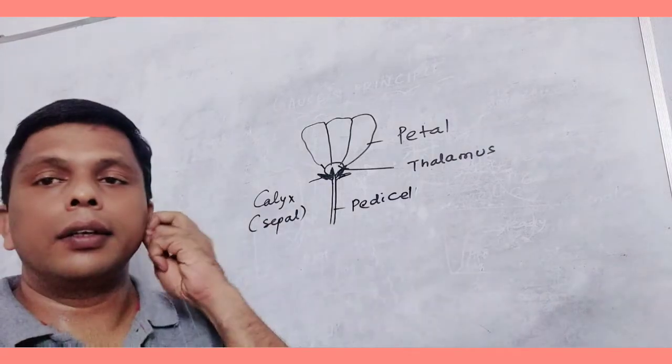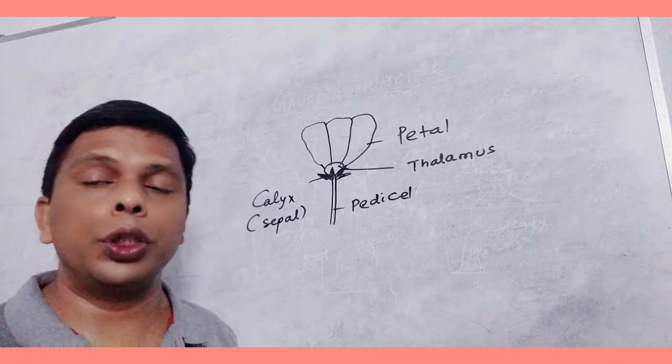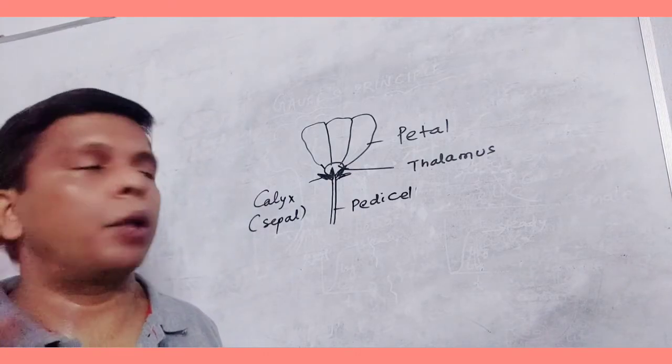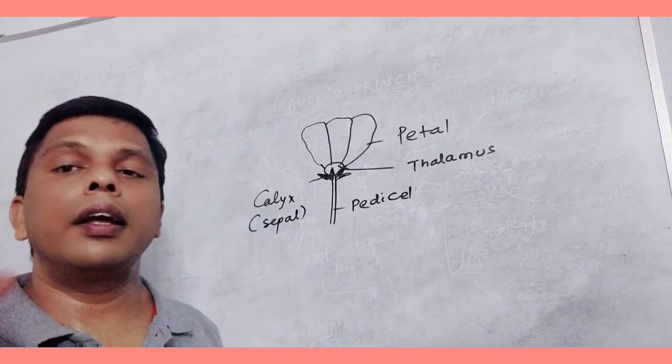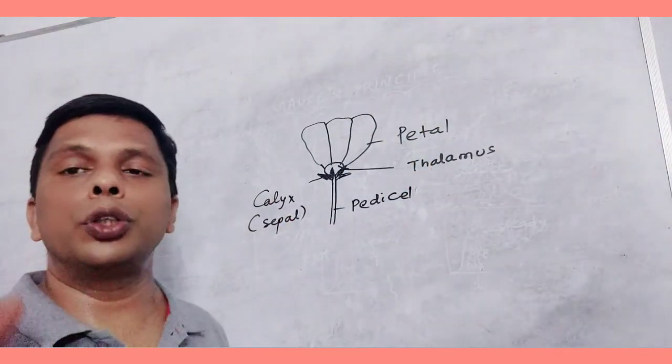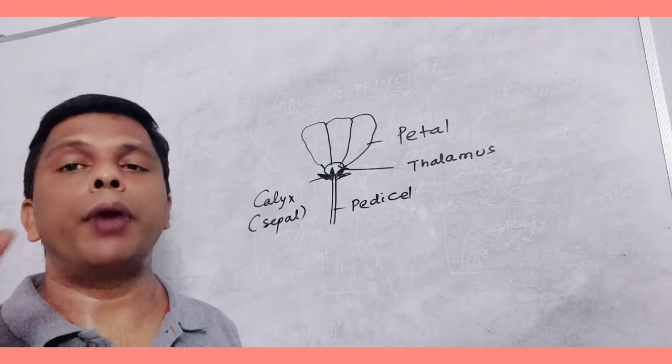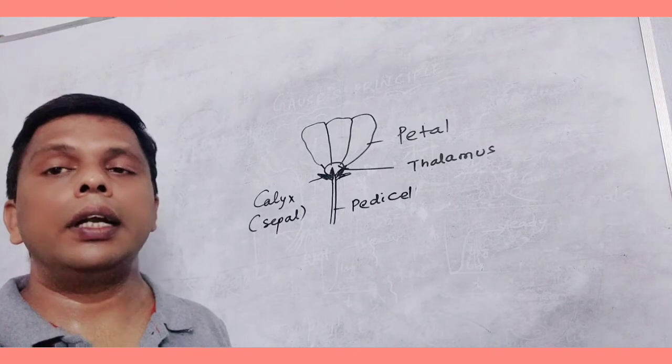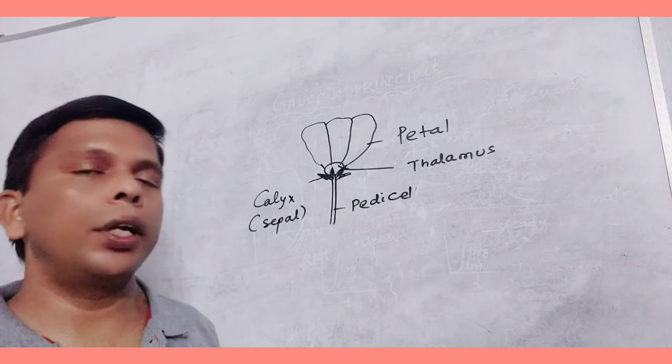Then androecium, the male reproductive part is androecium and the female reproductive part is gynoecium. How many parts are there? There are four different parts: calyx, corolla, androecium, gynoecium. When all these parts are present in a flower, it is said to be a complete flower, otherwise it is not complete.